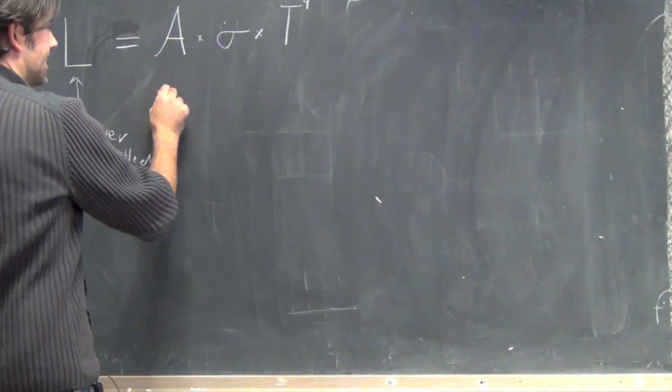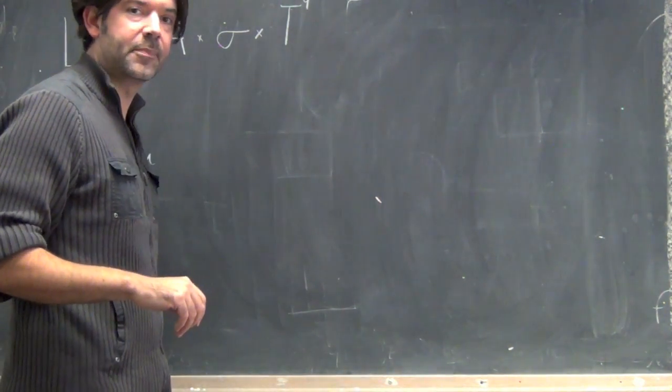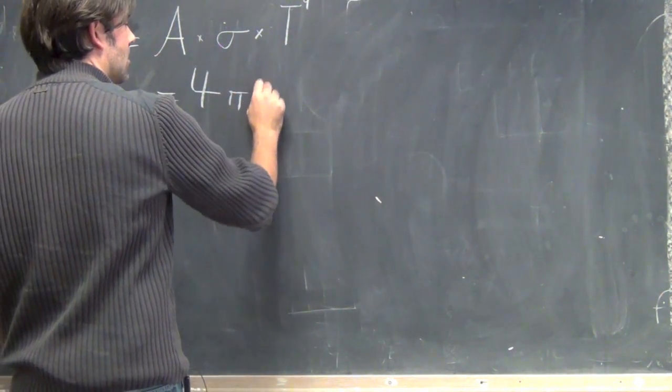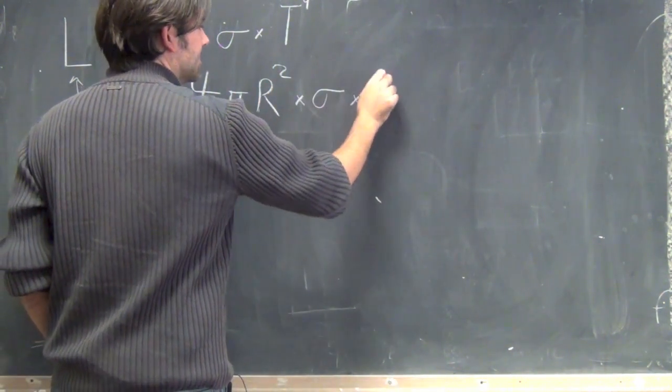So, we can write this as, for a spherical star, we can rewrite this as 4πr² times sigma times T to the fourth.